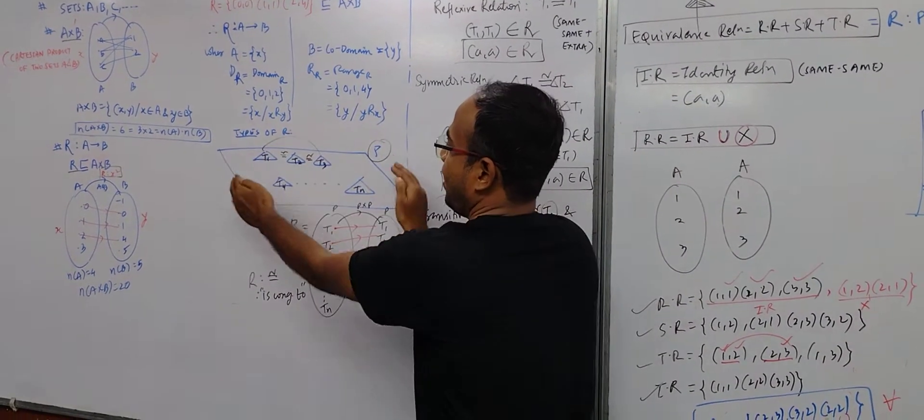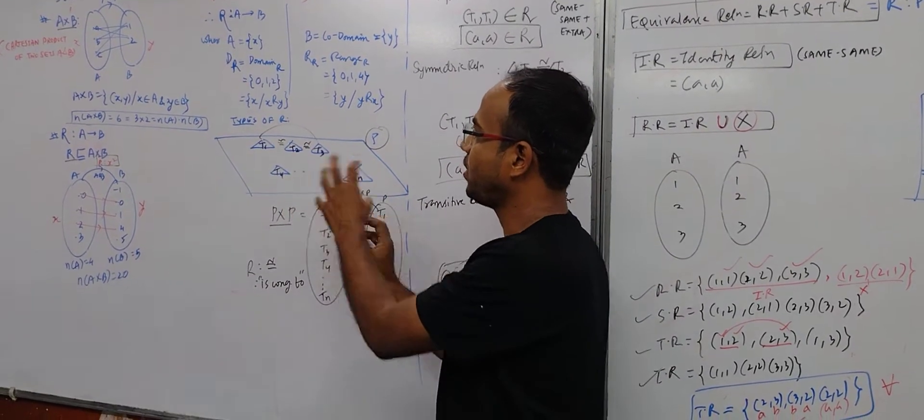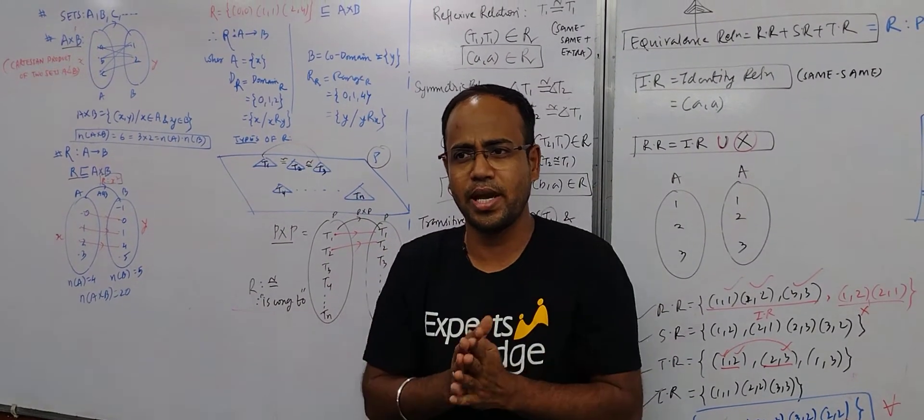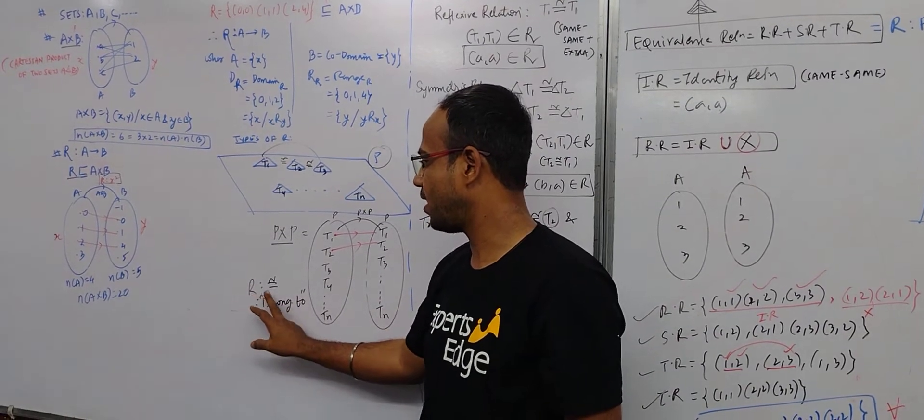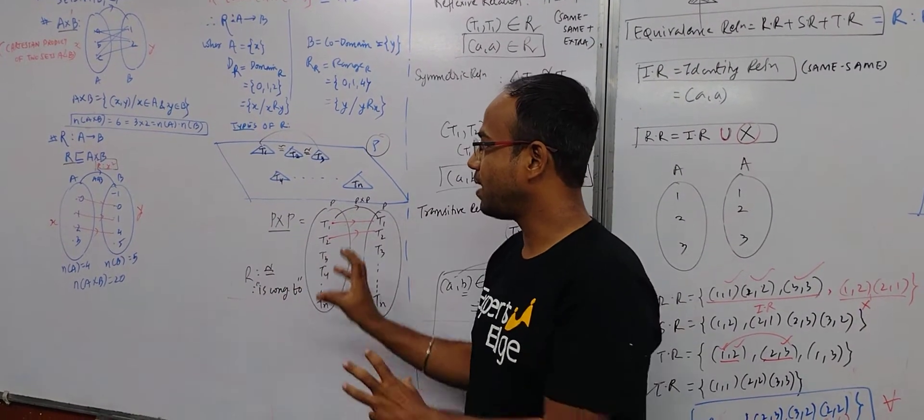Next, we take a plane with the types of relation. And in plane, T1, T2, T3, T4, so many triangles have been accepted. And I have defined this as congruence relation. Now first of all, we will see P cross P.